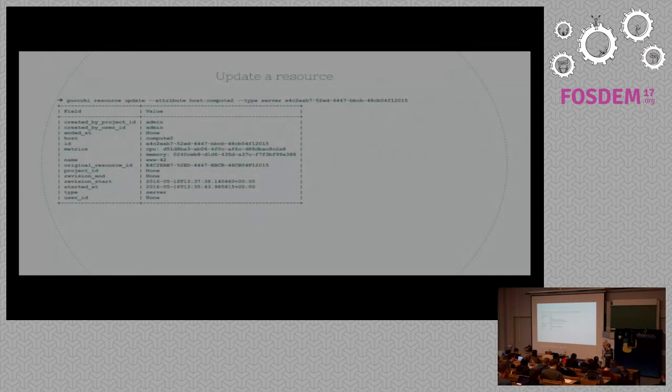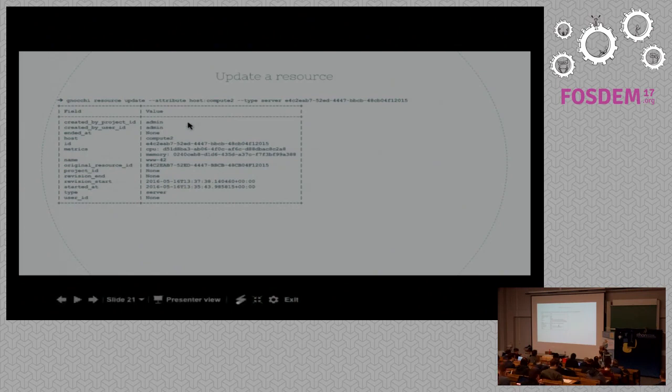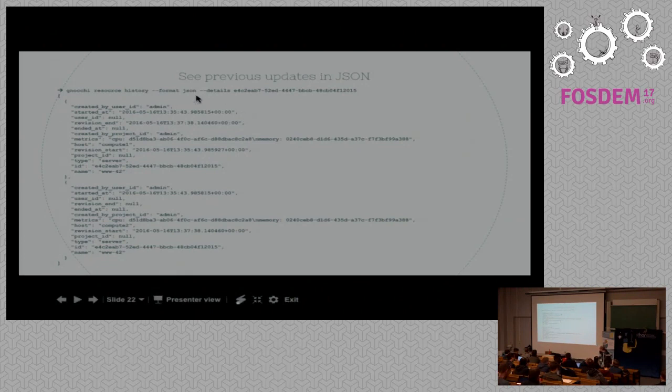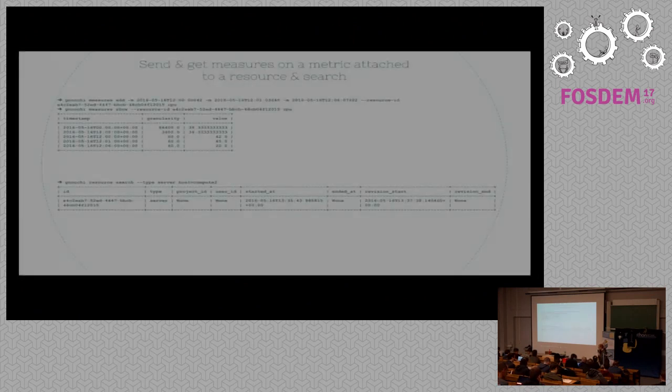Then you can obviously update the resource, so that happens a lot, for example, in the cloud computing system is that when you create an instance, you have to move it at some point to another host. That happens a lot. So in this example, what I've done is, I've changed the attribute host from compute one to compute two, saying the server has moved to another computer, so the attribute here is updated. And I can then retrieve the history of the resource. So I have a whole timeline of the history, which is stored here. In this case, I asked in the JSON format, and I just have here, the first cause compute one. I have the revision end and start, which indicates which part of the timeline this object exists. Something here, it changed to compute two at this time here. So I can retrieve the whole history of a resource object, which is pretty handy.